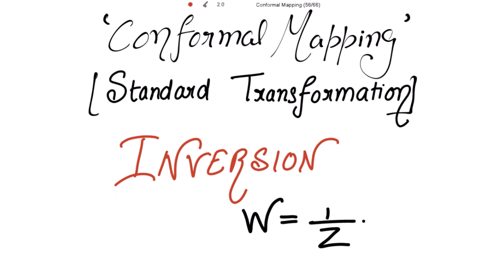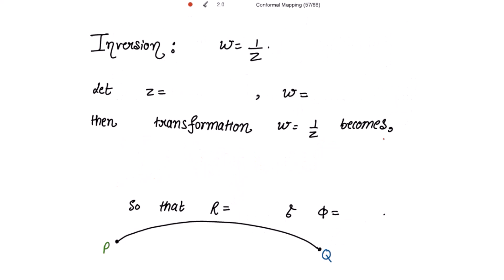The next standard transformation is inversion, where w is equal to 1 over z. For this transformation, taking z in polar form as r·e^(iθ) and w as R·e^(iφ), we substitute into w = 1/z to get R·e^(iφ) = (1/r)·e^(-iθ). Comparing, we get R = 1/r and φ = -θ.